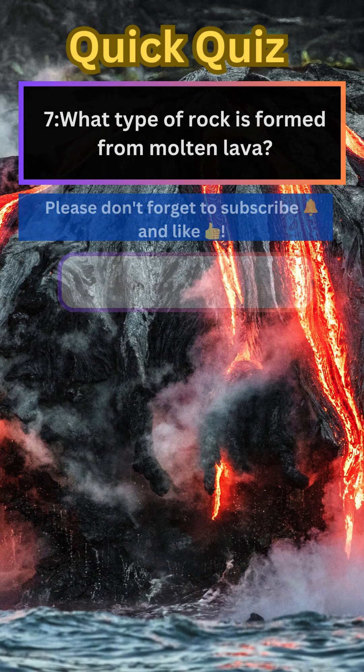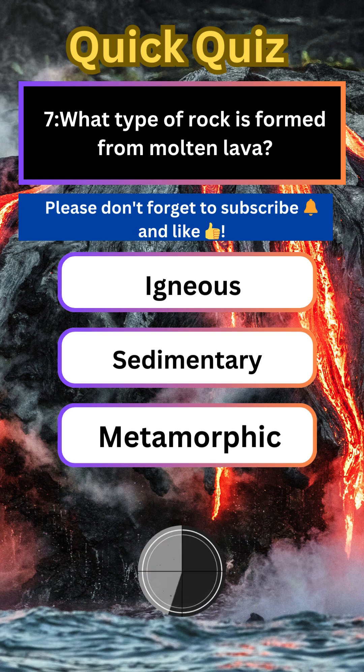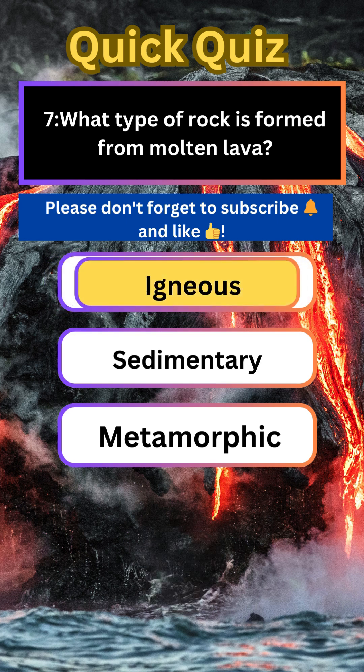What type of rock is formed from molten lava? Igneous.